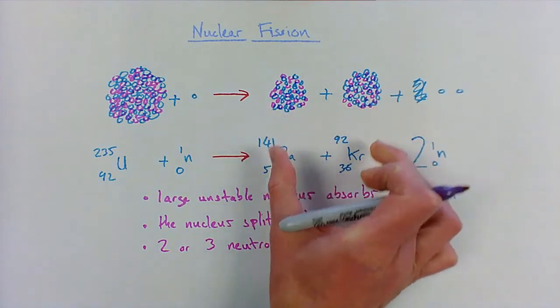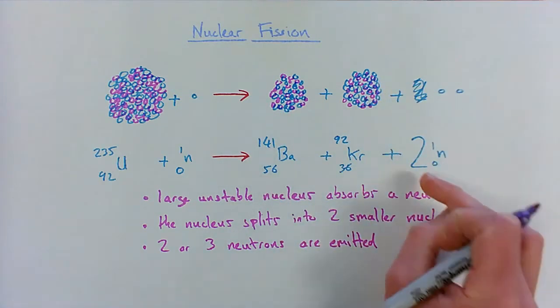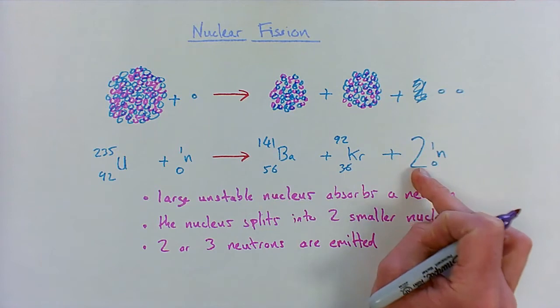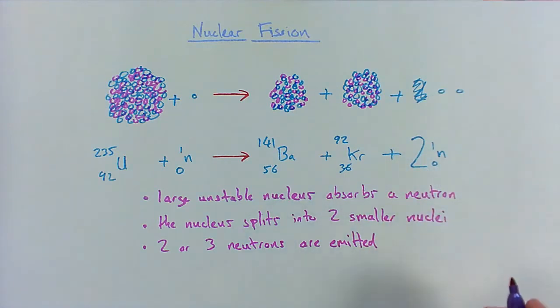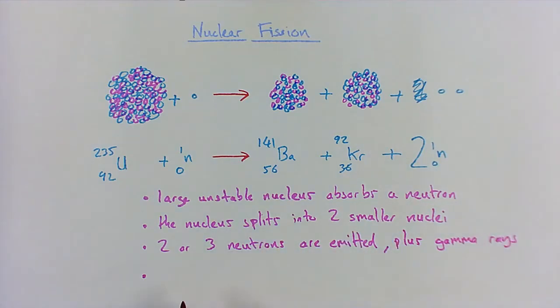It's a little bit random as to how they would split - whether it necessarily be barium and krypton every time, not always true. And that means sometimes there's two, sometimes there's three neutrons emitted. What I've not drawn on here is also gamma rays are emitted, plus gamma rays. And then the final thing, and this is why it's of use in a nuclear power station, is that energy is released.